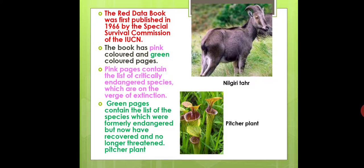One example is the Nilgiri Thar, which is still under threat because it is confined to particular regions. In Kerala it is protected in Eravikulam National Park. Another example is the Pitcher Plant, which is also under protection.